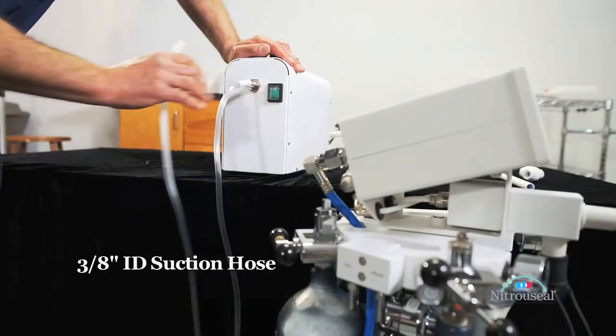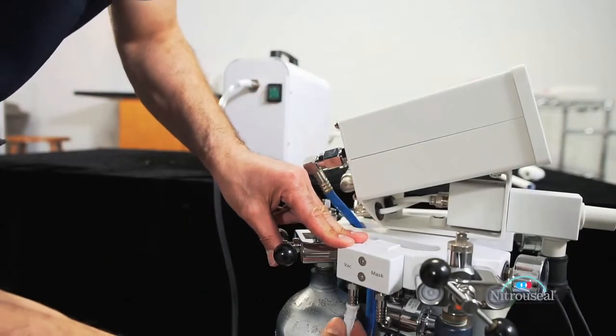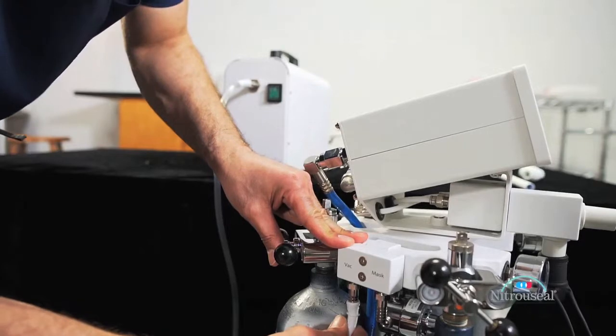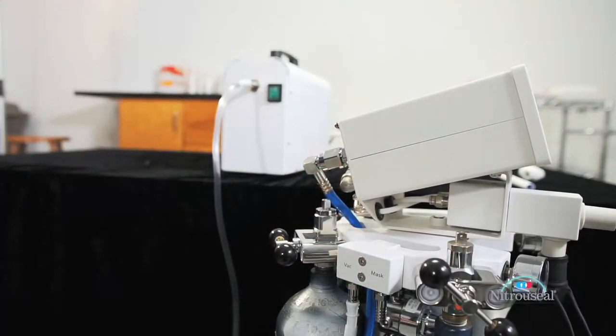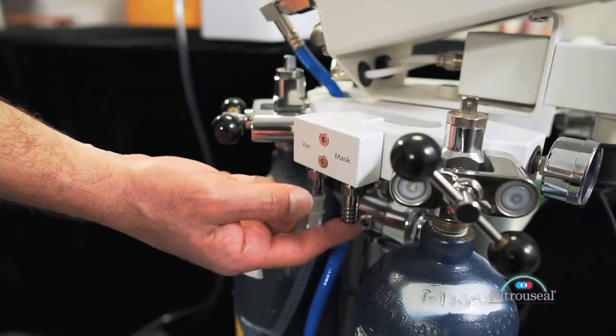Using a standard 3/8 inch ID suction hose, connect the suction nozzle on the front panel of the Mini Scav to the nipple marked VAC located on the remote vacuum block mounted on the flow meter stand. Now test the suction on the nipple marked MASK.